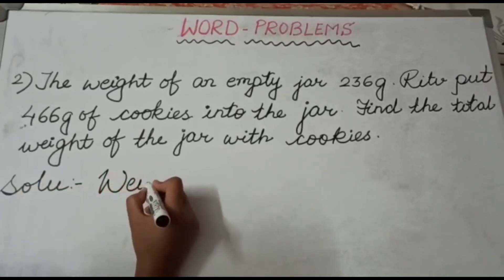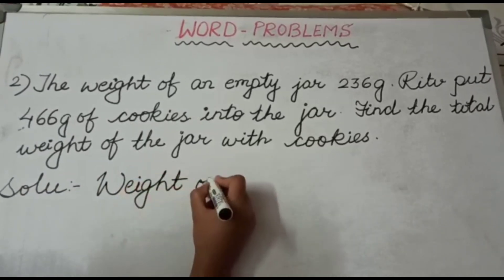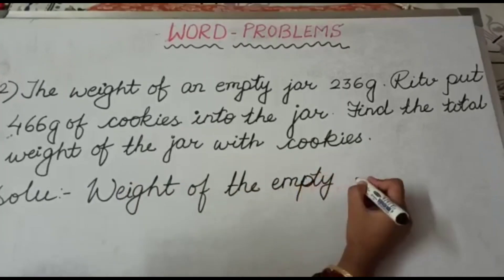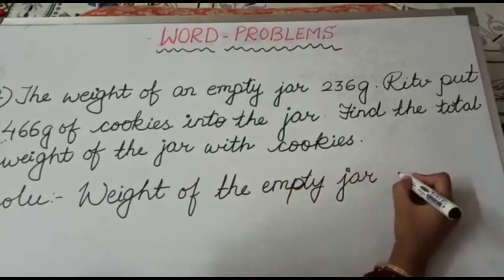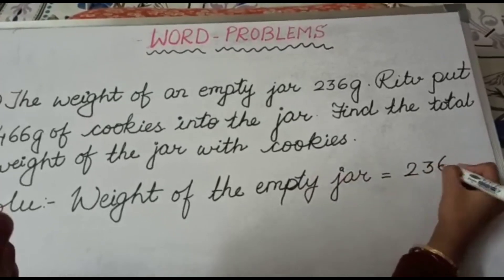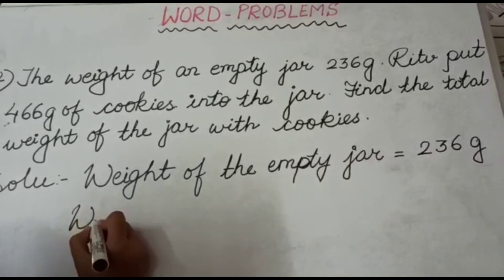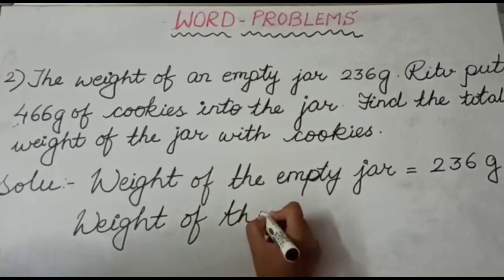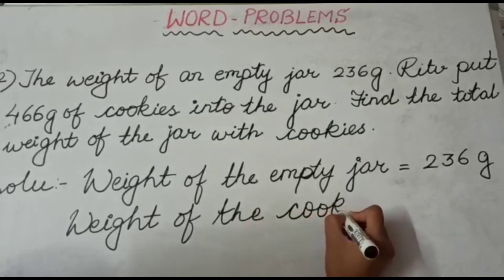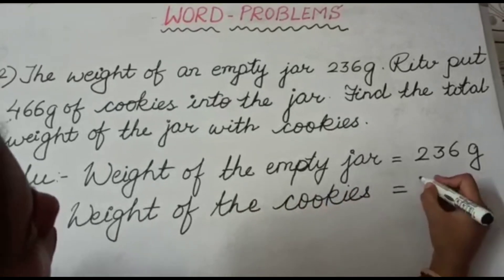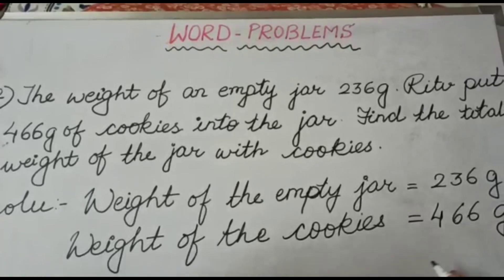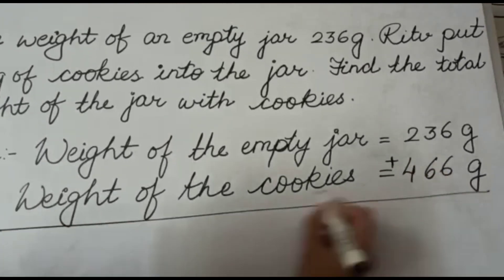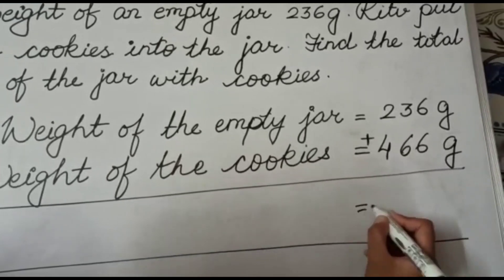First we write down the weight of the empty jar, that is 236 grams. Then we will write the weight of the cookies, that is 466 grams. As we have to find the total weight, we have to do the addition. First we will write down the gram column.